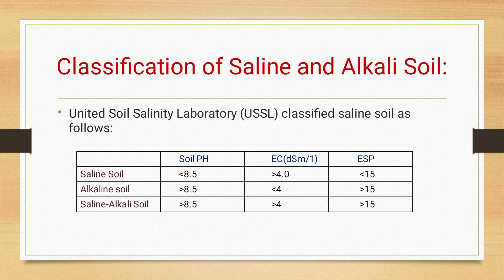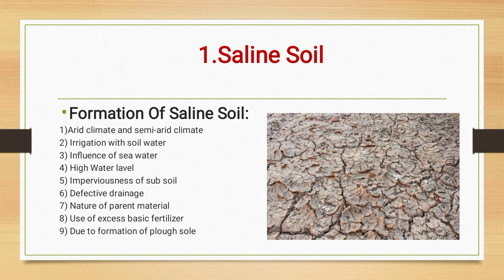What is the formation of saline soil? How does saline soil form? First, it forms in arid and semi-arid climates. Second, from irrigation with saline water. Third, from the influence of seawater and high water table. Fourth, from impermeable subsoil and defective drainage. Fifth, from the nature of parent material. Sixth, from the use of excess basic fertilizers, and from the formation of flow accumulation.